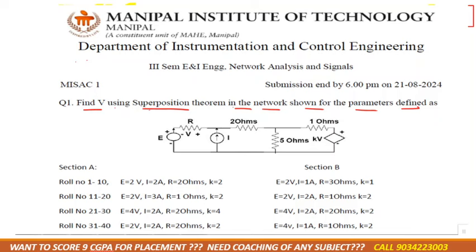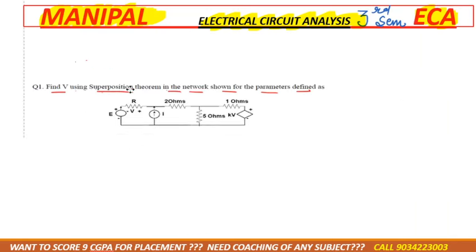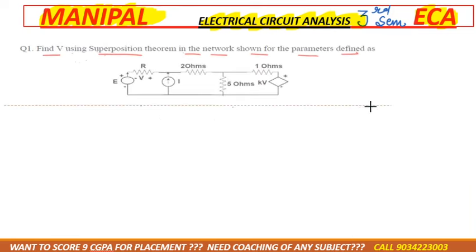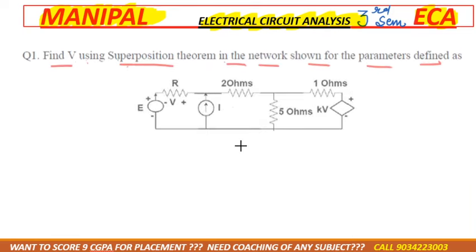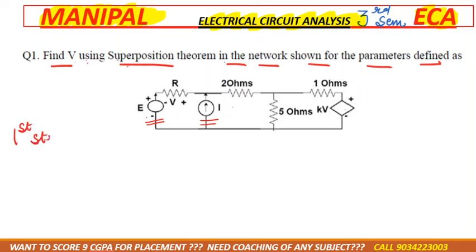The steps for superposition theorem are: we have to take one source at a time, and the remaining sources must be removed. This diagram has independent sources and dependent sources. There are two independent sources: voltage source e and current source i. The dependent source must be kept in both steps. This question will be solved in two steps.